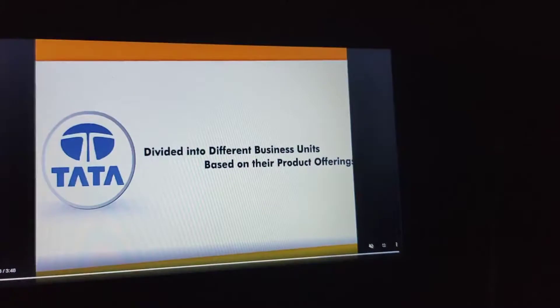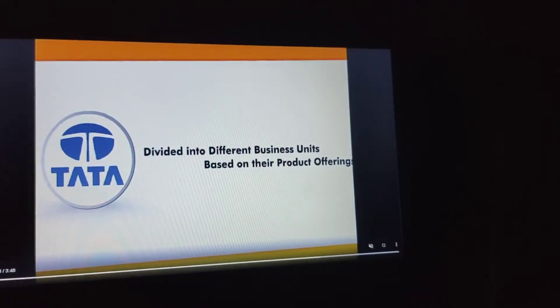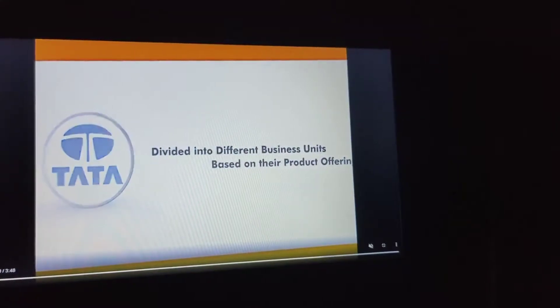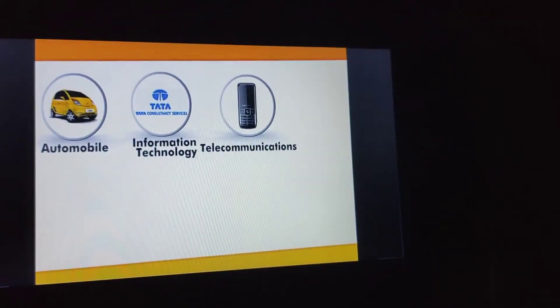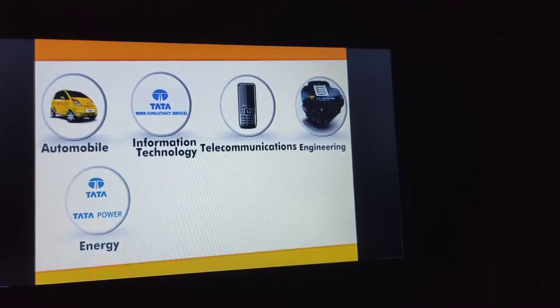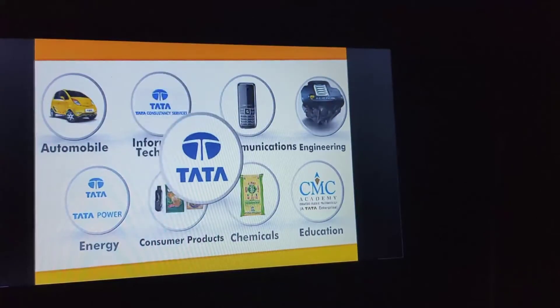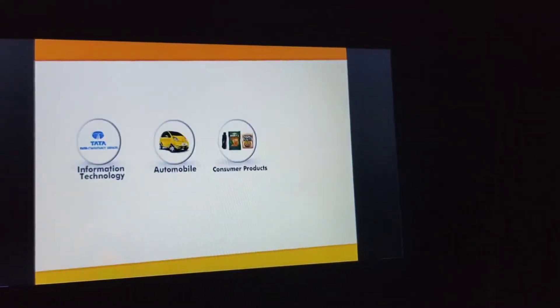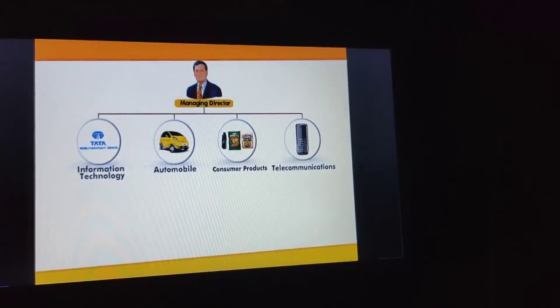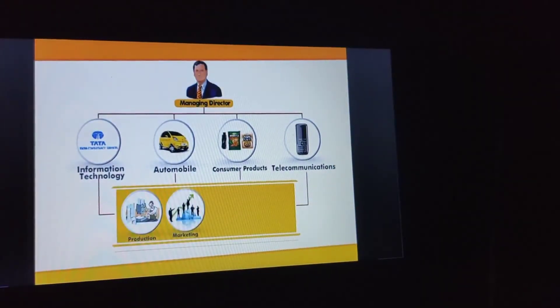For example, Tata has divided into different business units based on their product offerings like automobiles, information technology, telecommunications, engineering, energy, consumer products, chemicals, and education. This kind of structure is an example of divisional structure, where the managing director has to supervise all these departments or divisions.